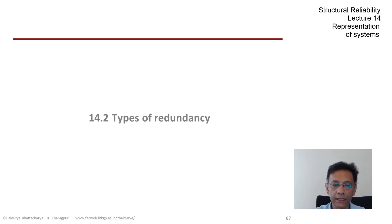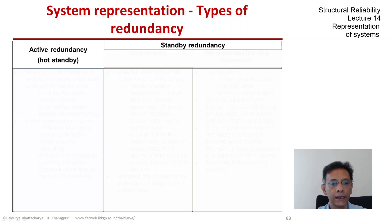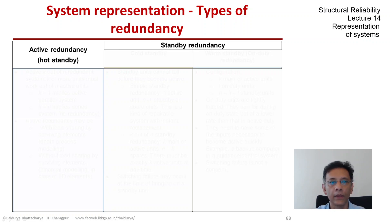But now, let us look at the different types of redundancy that are normally defined in reliability textbooks. We broadly have two kinds of redundancy: standby redundancy and active redundancy.